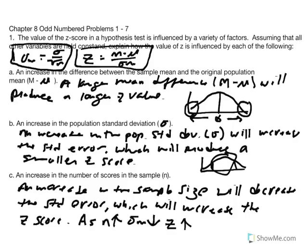This is a good thing because we want z-values to be large and further out in the tails, further from the center z-score of zero.